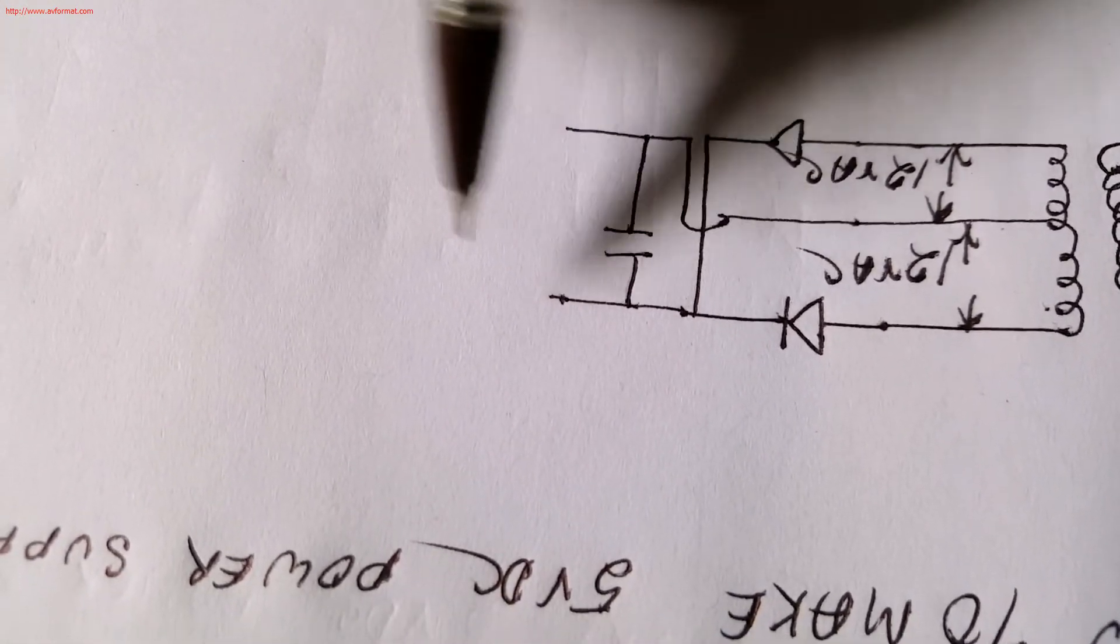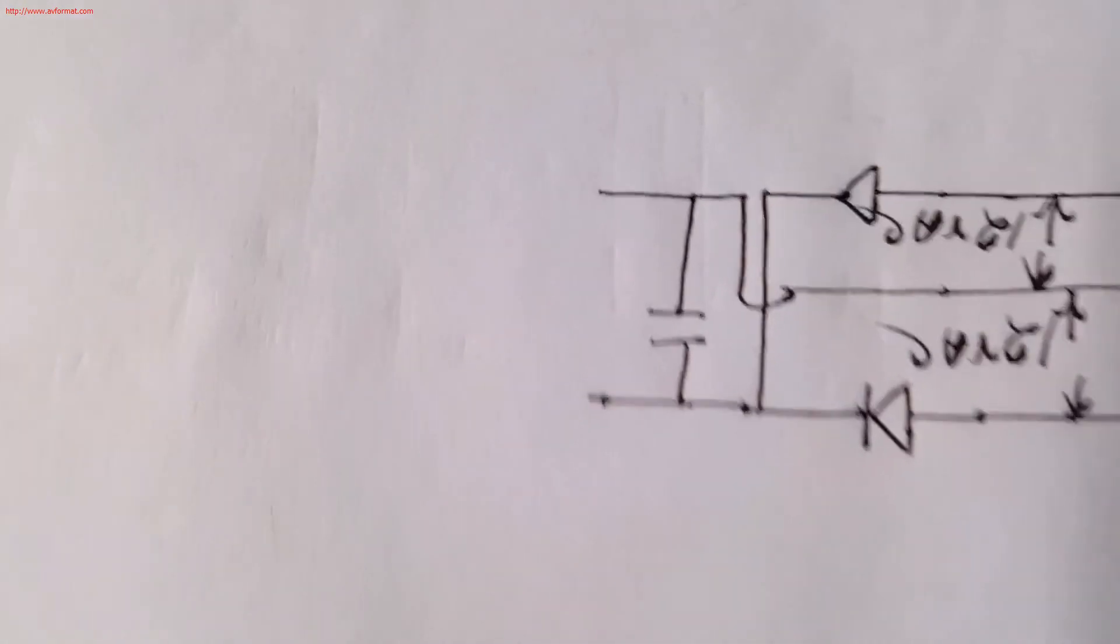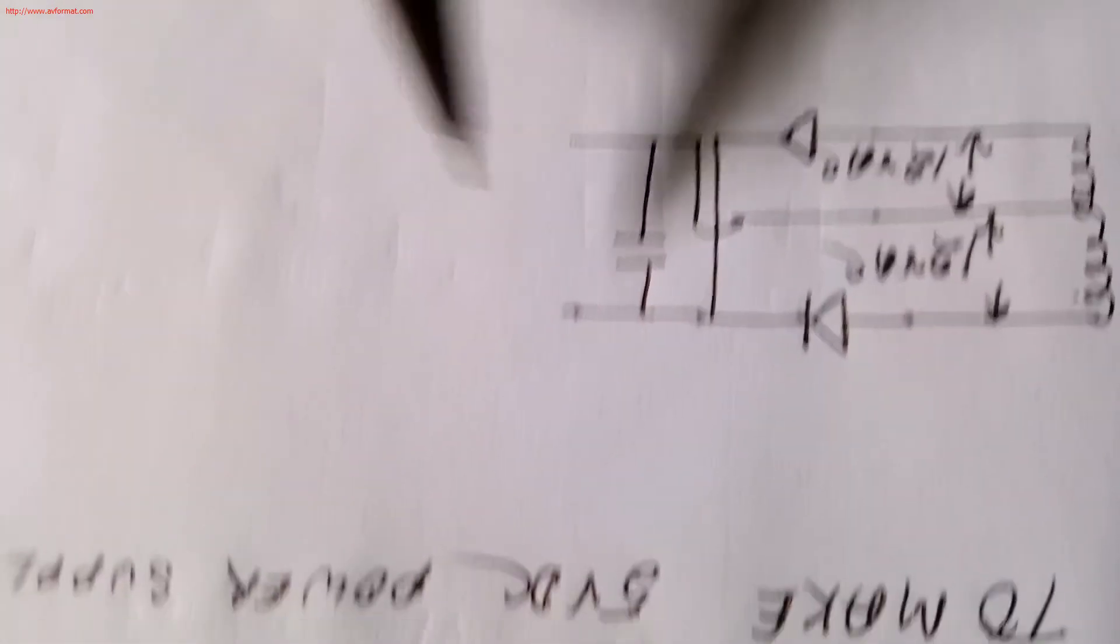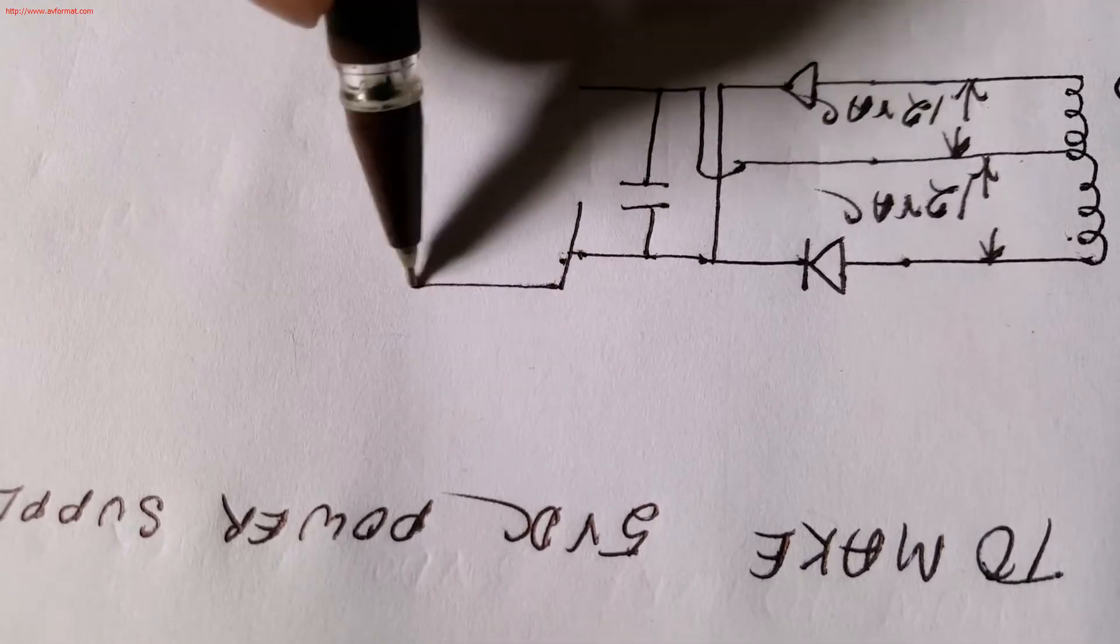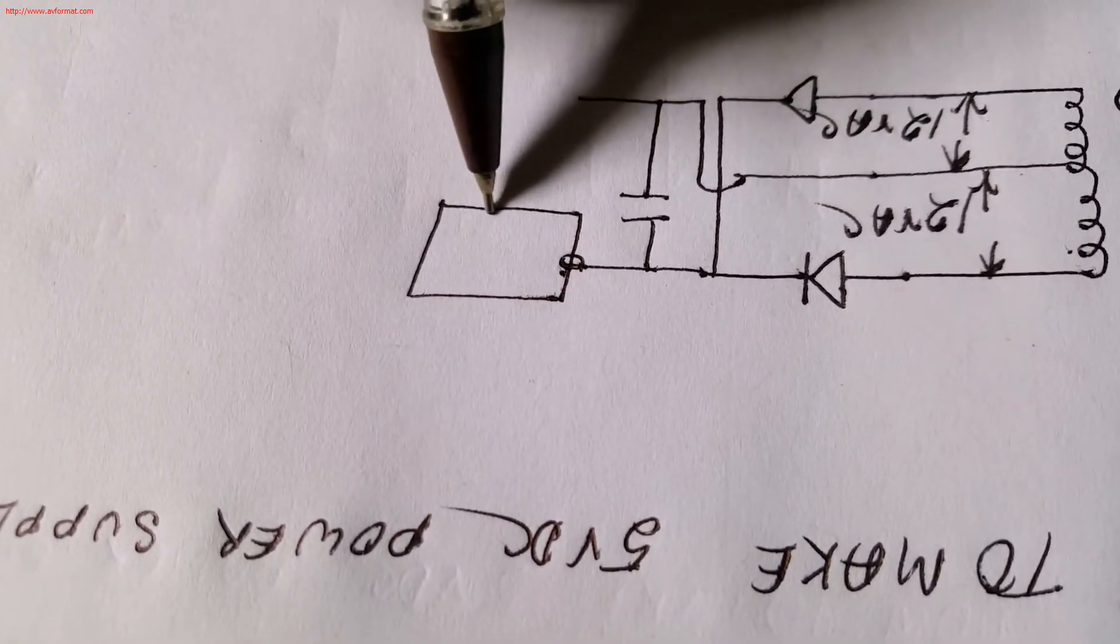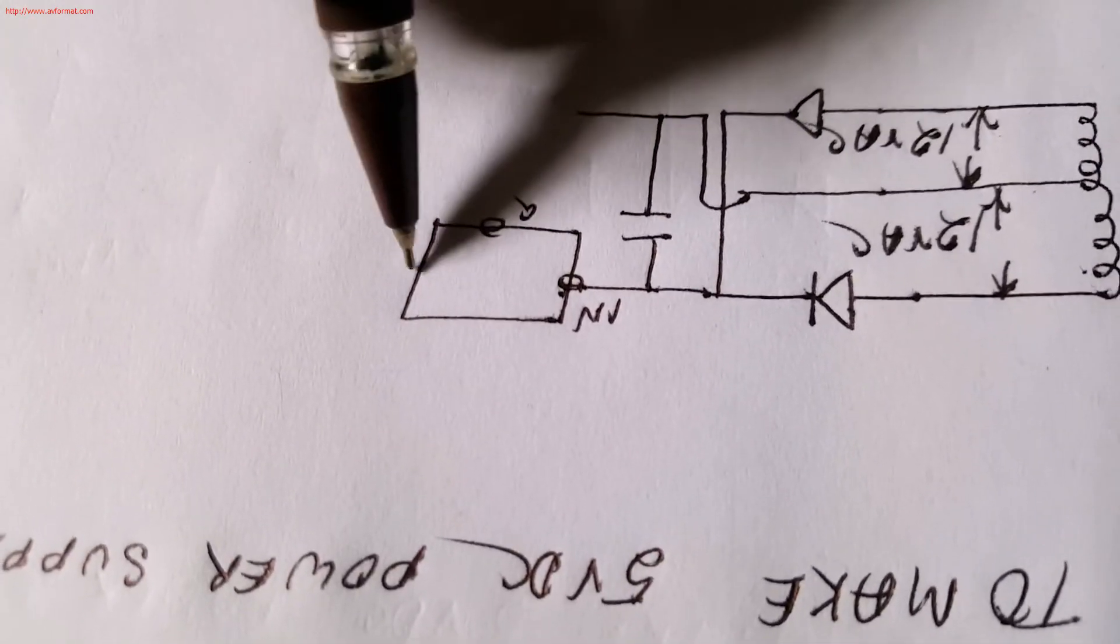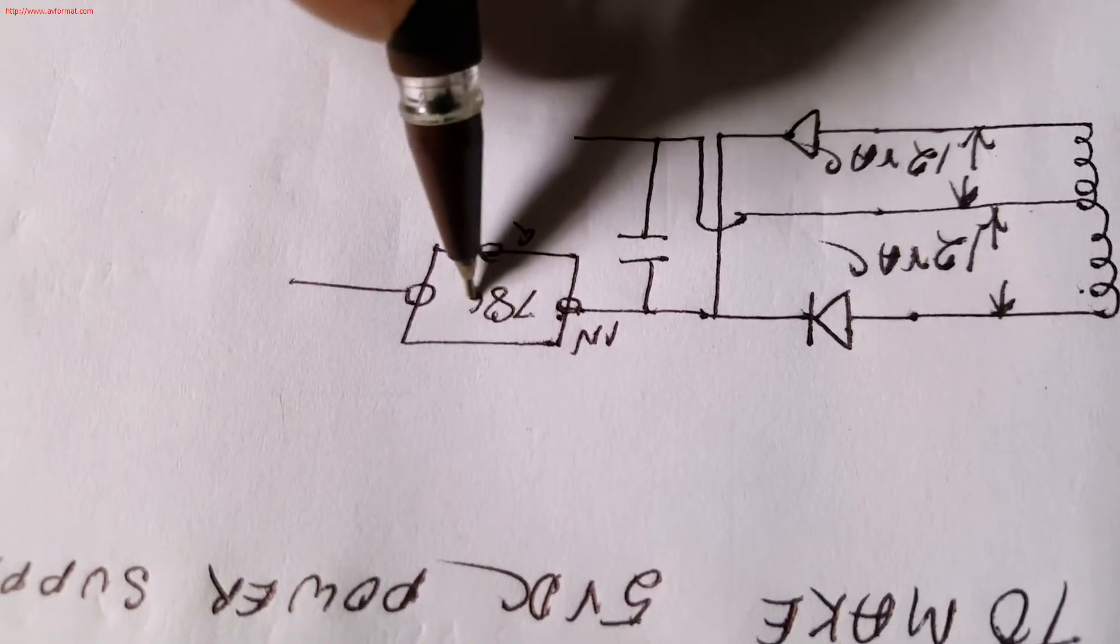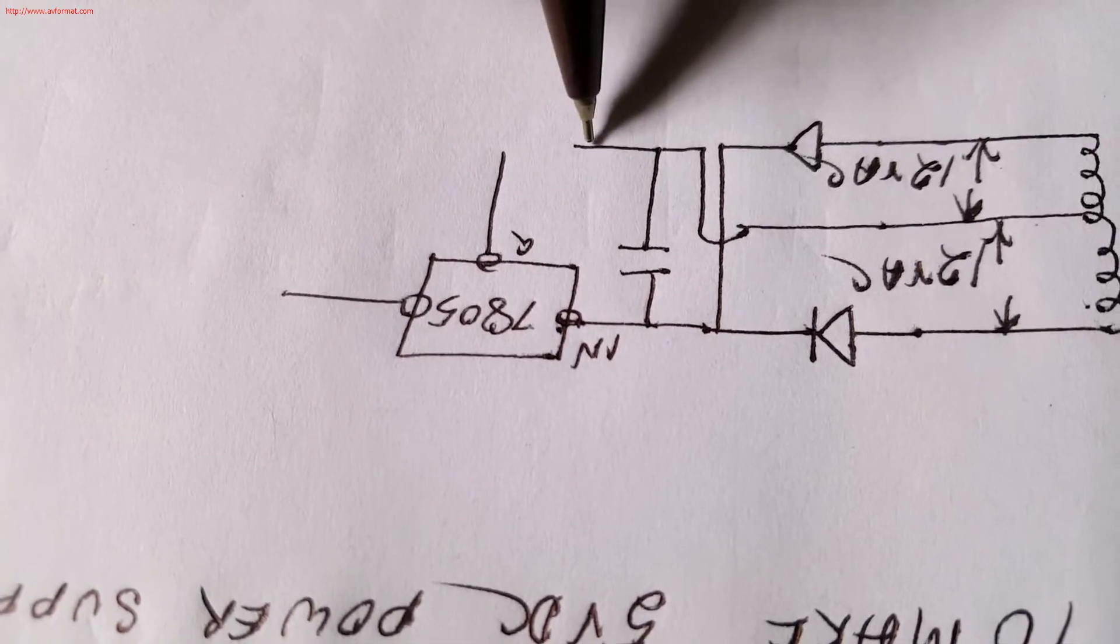Again for pure DC we want to use 5 volt regulator. So we need 5 volt regulator. This is input and this is ground, this is output. IC is 7805, so this one is ground.